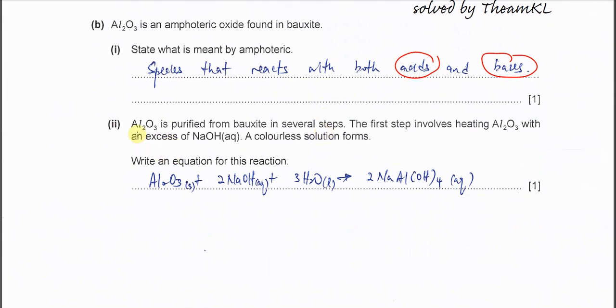Part 2: Aluminum oxide is purified from bauxite in multiple steps. The first step involves heating aluminum oxide with NaOH aqueous, a colorless solution forms. You need to give an equation between aluminum oxide and sodium hydroxide. Of course it's not going to be just these two. Many candidates forgot this H2O. This one is the base, this one is acid. This will form a salt, NaAl(OH)4.